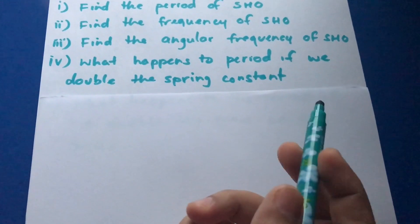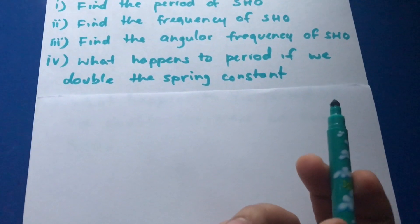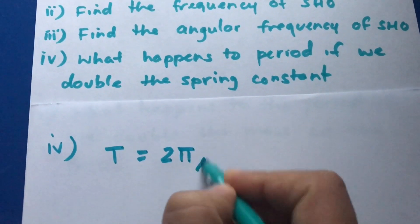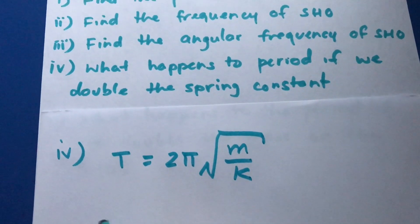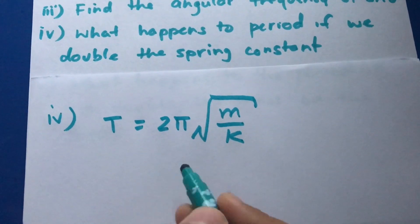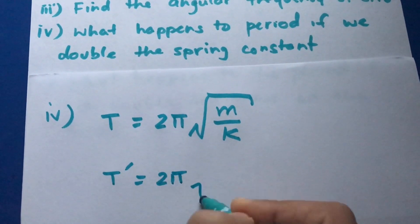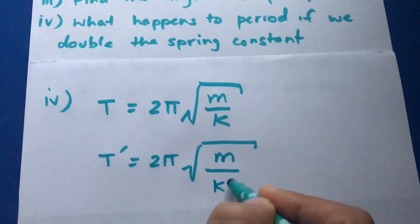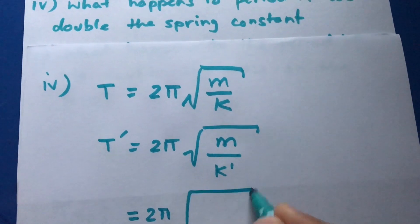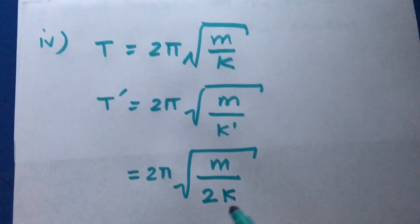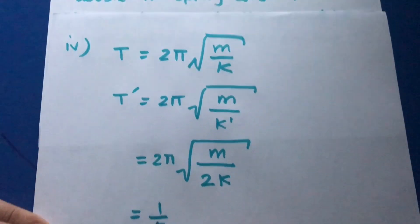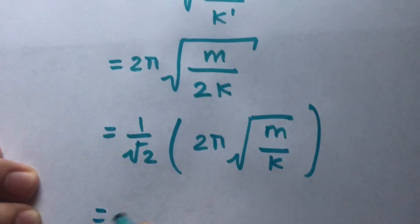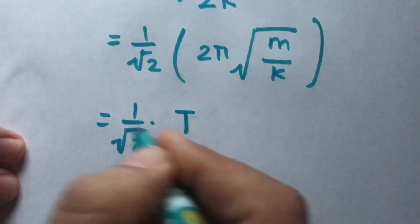Question number four reads: What happens to period if we double the spring constant? You have the expression of time period as T equals 2π times the square root of m over k. If we double the spring constant, T prime will simply be 2π times the square root of m over k prime, which is 2π times the square root of m over 2k. This is 1 over root 2 times the original period. So your time period actually gets reduced by a factor of root 2.